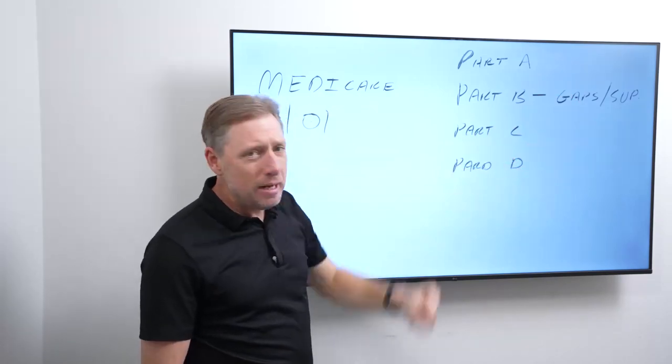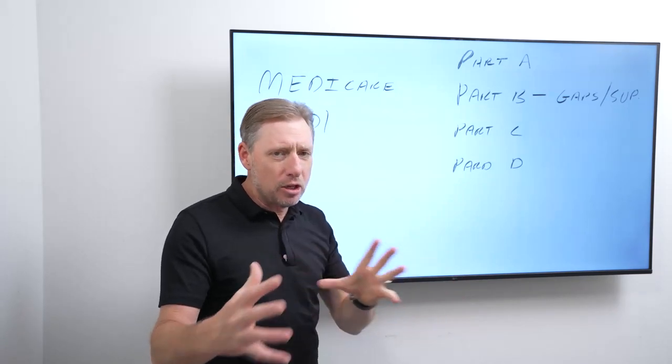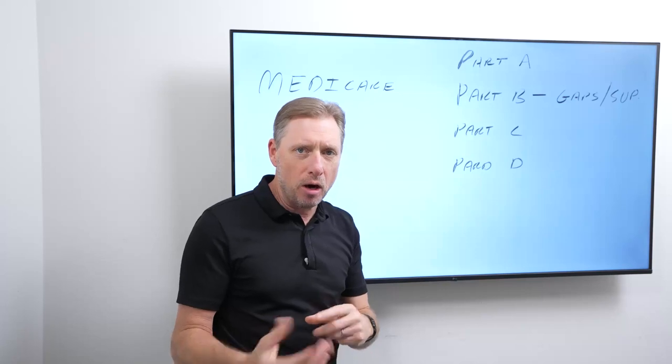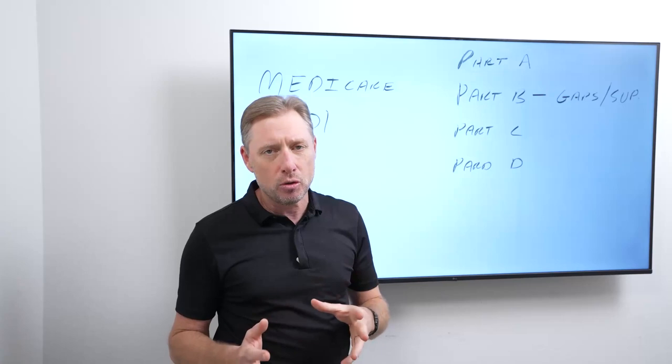Now Part D is prescription drugs. So with Part D, you're looking at prescription drugs. And this can range based on what drugs you take. So what we typically do is figure somewhere around $100 a month for prescription drugs.